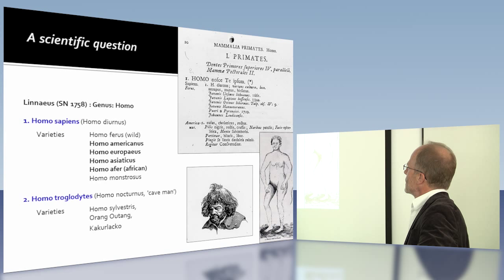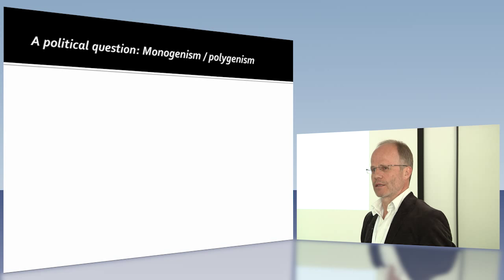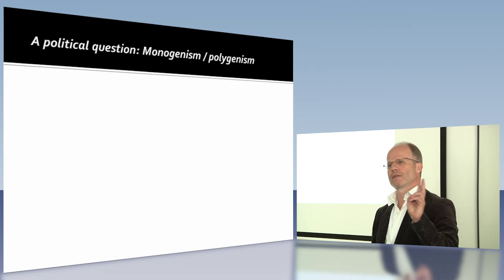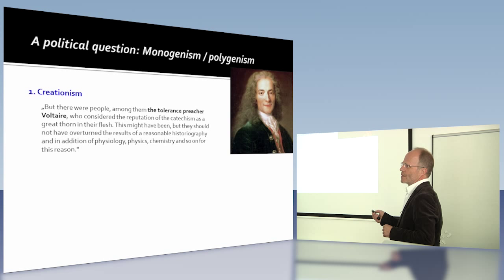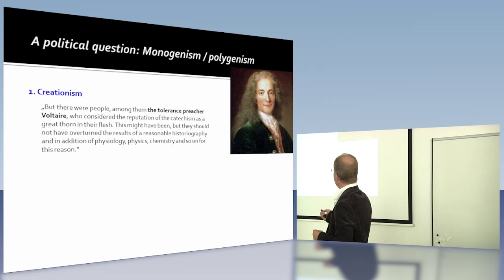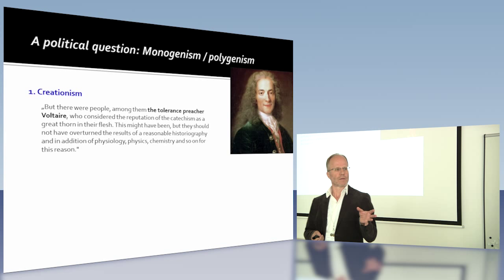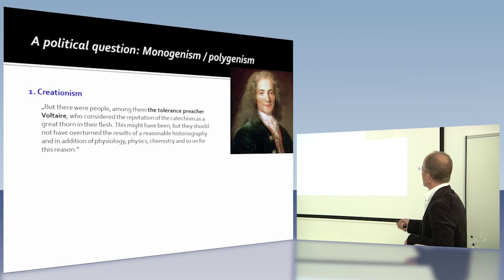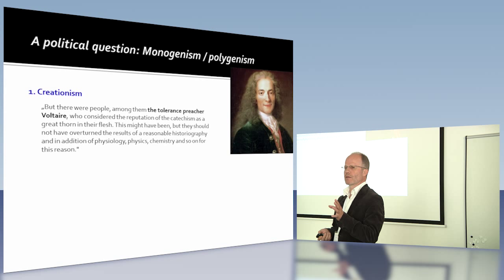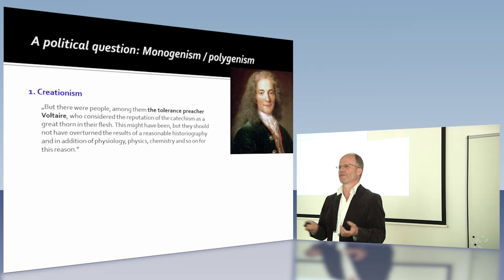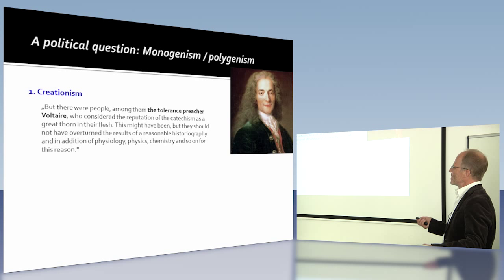And of course there is the political question of the whole thing. This is monogenism versus polygenism. Interestingly, there are two aspects. One is creationism and biblical literalism. Polygenists, or some Enlightenment philosophers like Voltaire, criticized the monogenic view because it was too close to the biblical tradition — they thought this would give credibility to the Bible. So they criticized monogenism from this perspective.